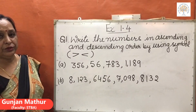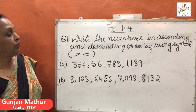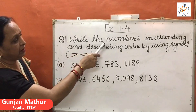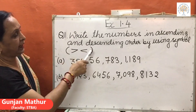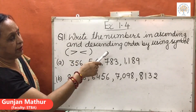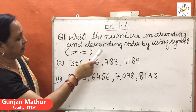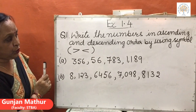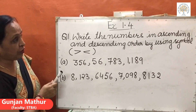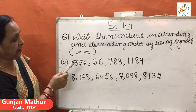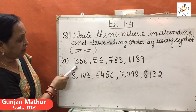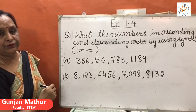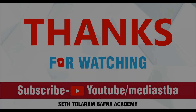For practice at home, children, do the following sum: write the numbers in ascending and descending order using the symbols less than and greater than. You have to write both ascending and descending order of the given numbers. Thank you.